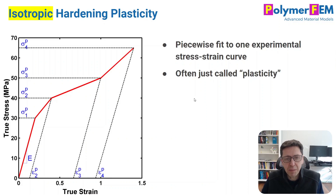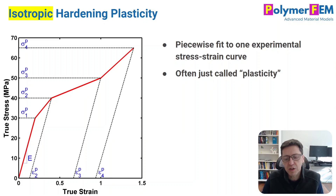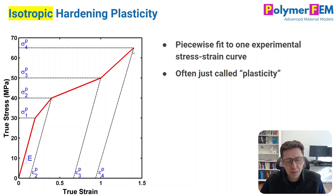Let's start with the most basic plasticity model: isotropic hardening plasticity. This is a model where you do a tension test on a specimen, pull on it, get the stress-strain curve, and then fit a piecewise linear representation of that curve into the plasticity model. It's very easy to use, you get a very good fit to one curve, and this is what people usually call the plasticity model.